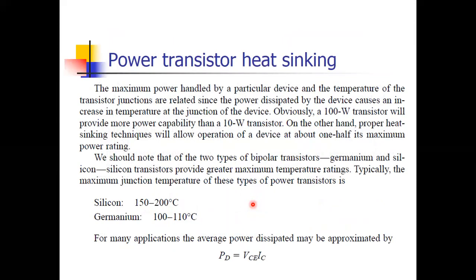The maximum power handled by any device depends on temperature. A 100-watt transistor provides more power handling capacity than a 10-watt transistor. Proper heat sinking allows operation at about one half of maximum power rating. Silicon transistors have a temperature rating up to 200°C, while germanium has a rating up to 100°C, so heat sink design depends on these materials.